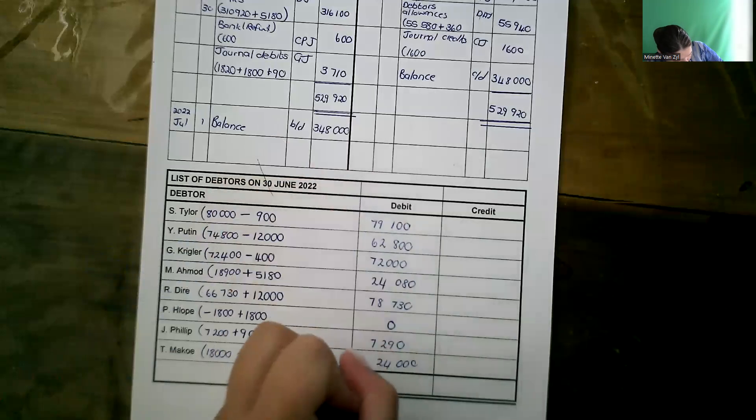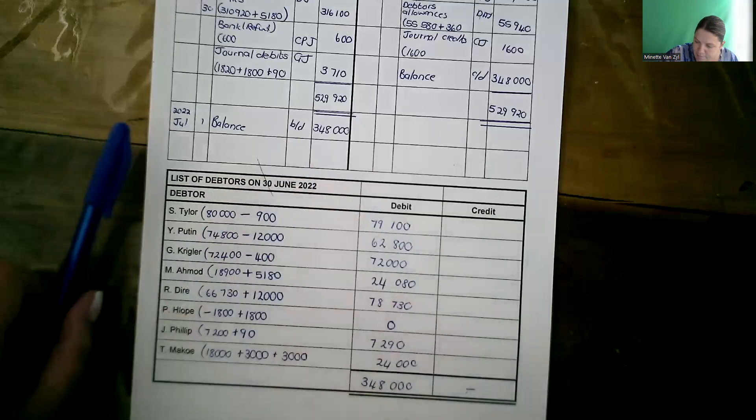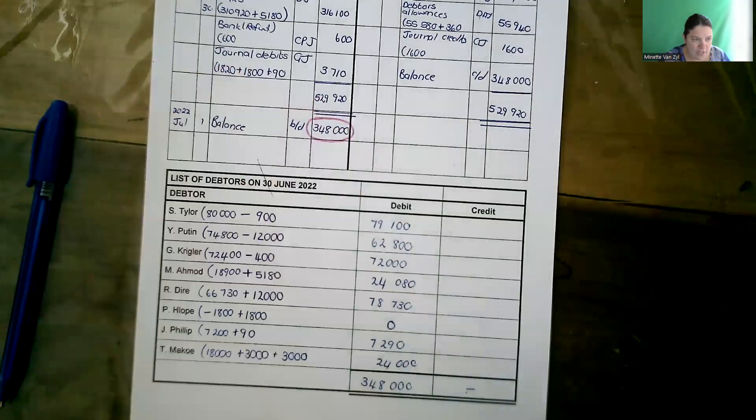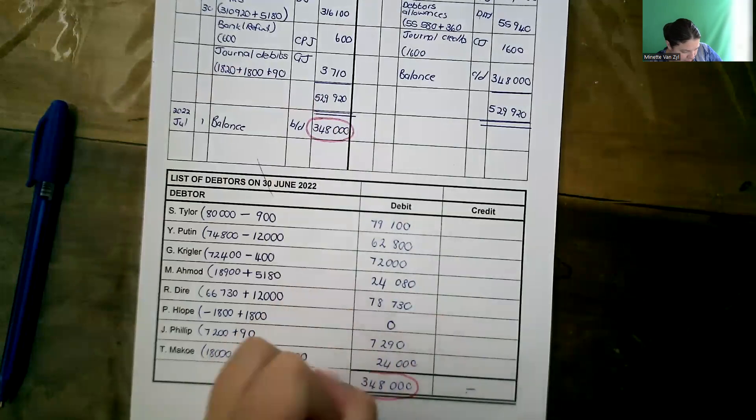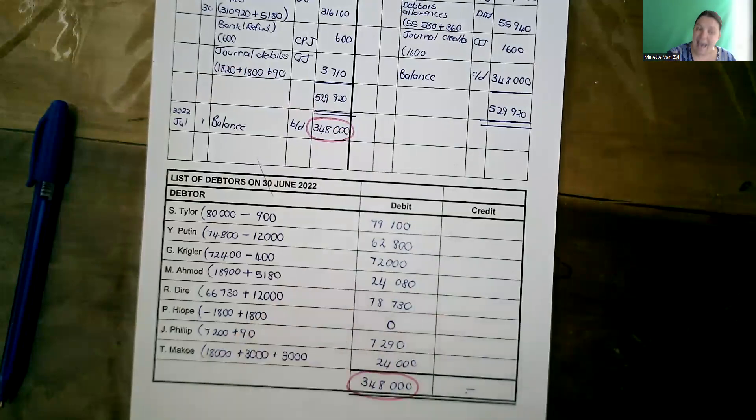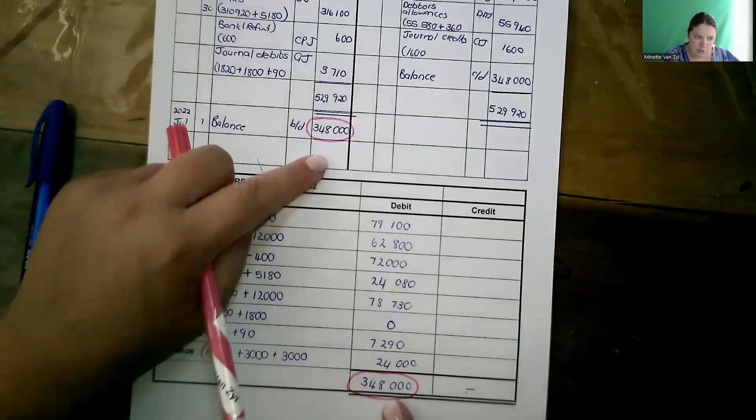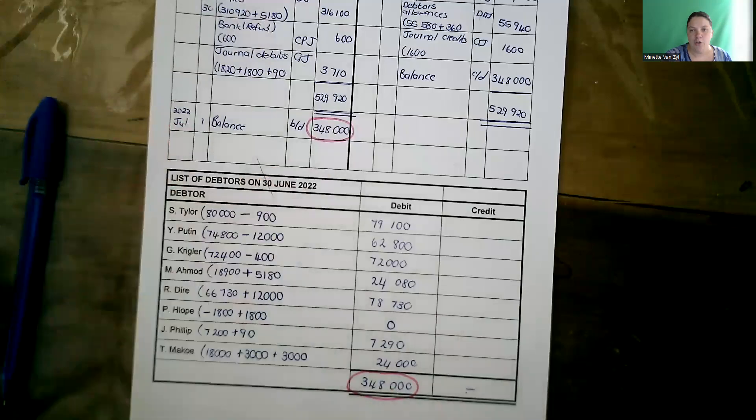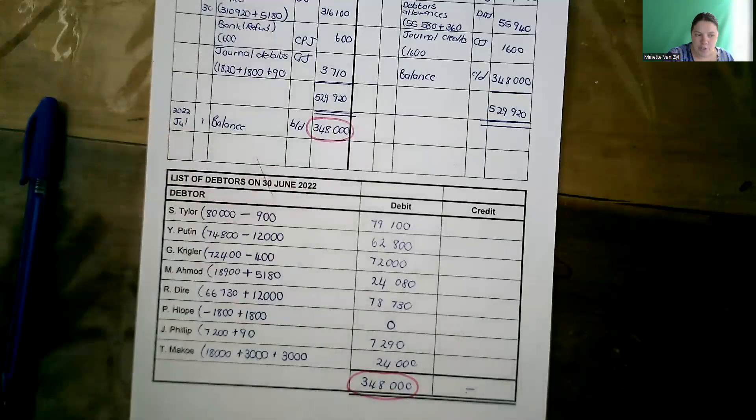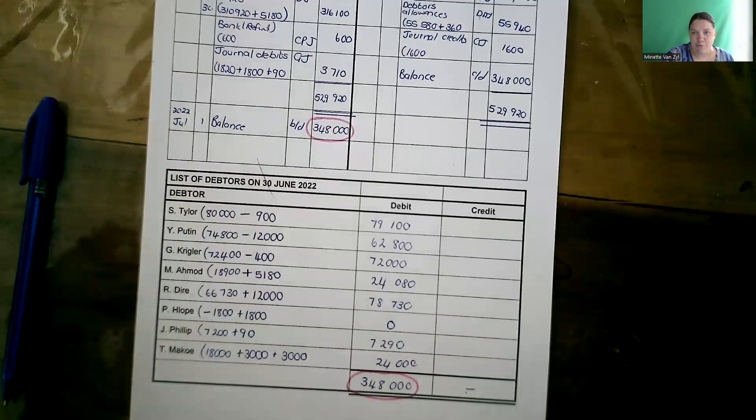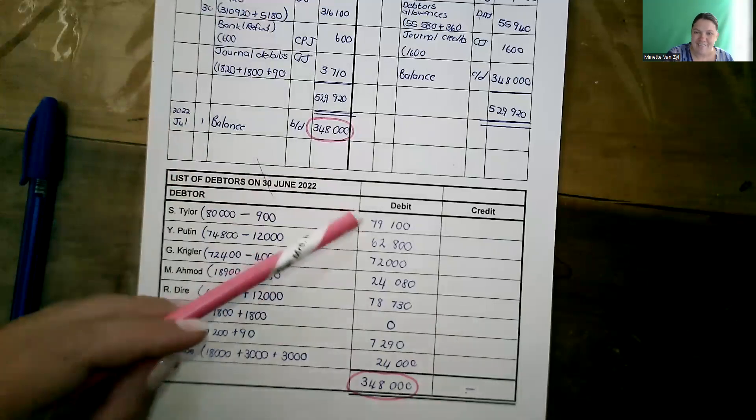What we mean by does it balance? You want to ensure that your balance brought down from your control account is the same as the list of totals. They have to be the same because they are compiled from the same information. Both these are compiled from the journals. So we want it to balance. And if we do, we know that there's no mistakes. I hope you enjoyed and you learned from this video. You're welcome to in the comments pop me a question. If you have any further questions regarding debtors recon. Bye bye everybody.